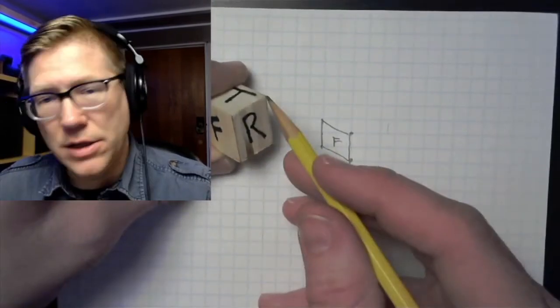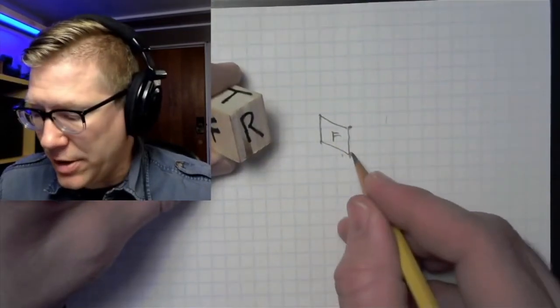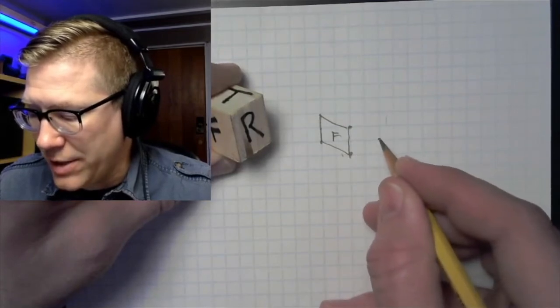Now I want to make the right side of my object, so same kind of thing. I'm going to count over two, and up one, and I'm going to make a dot there.